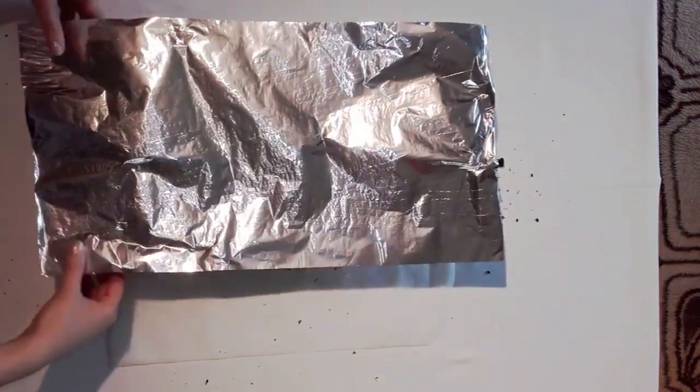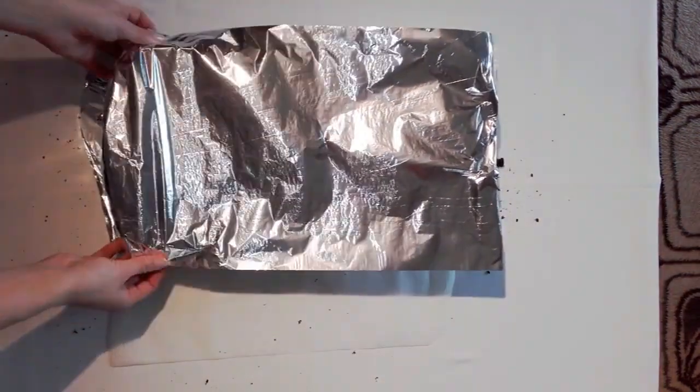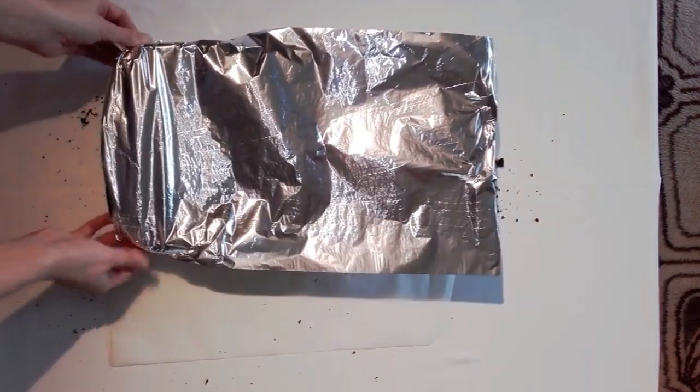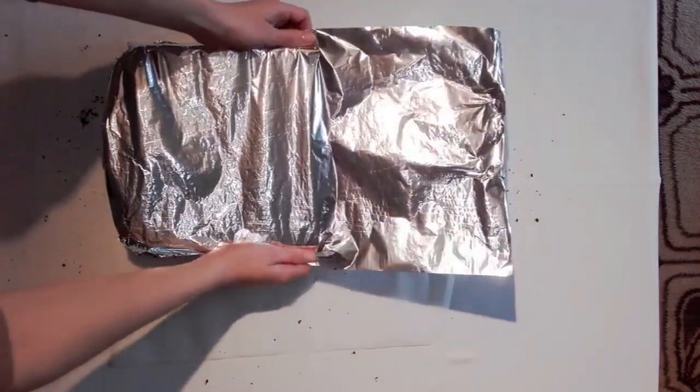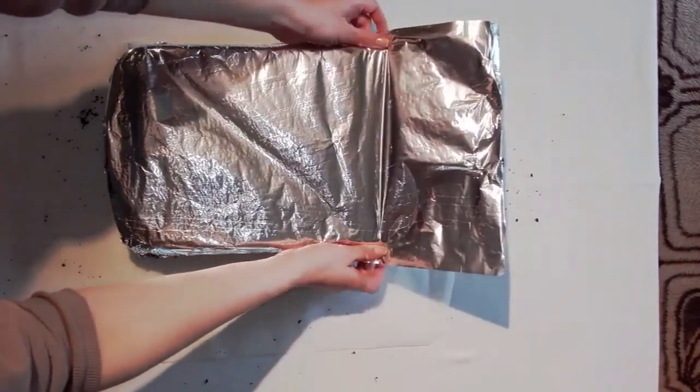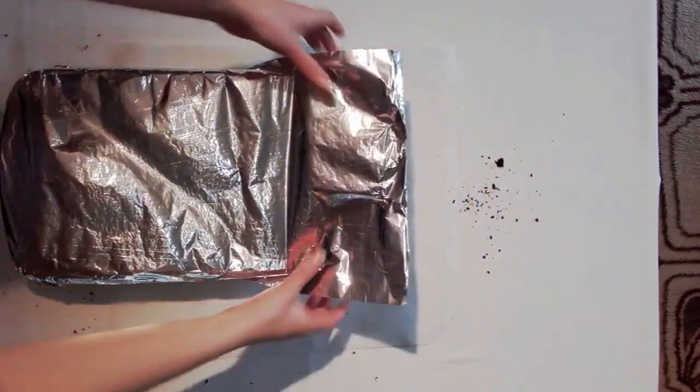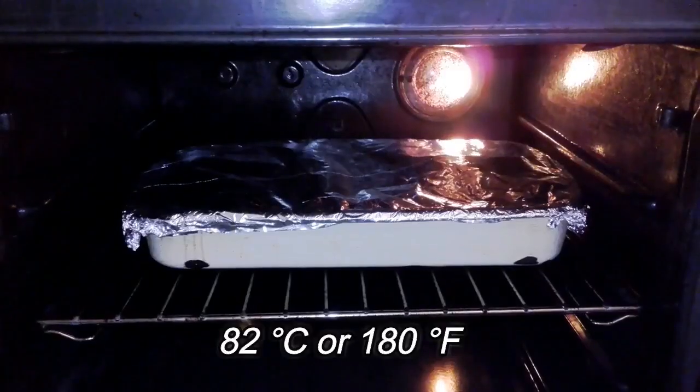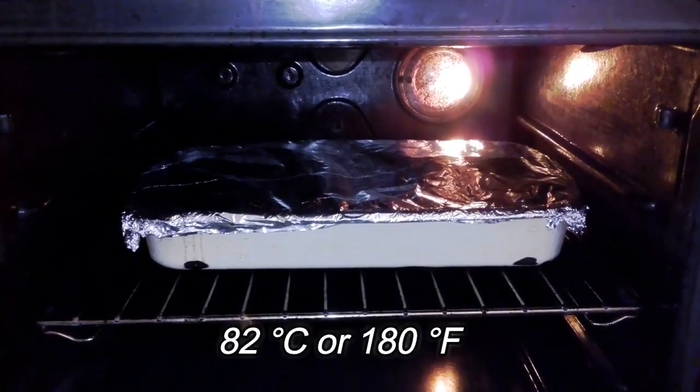Then, cover the pan with aluminum foil. Move it to a preheated oven and bake for half an hour at 82 degrees Celsius or 180 degrees Fahrenheit.